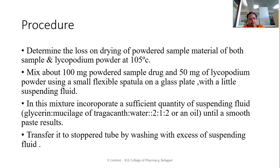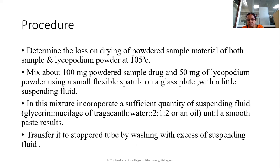Procedure for the lycopodium spore method: First, the powder should be dried at 105 degrees centigrade. Determine the loss on drying of both the powder sample material and the lycopodium powder at 105 degrees centigrade. Mix approximately 100 mg of the powder sample drug and 50 mg of lycopodium powder — a ratio of 2:1 — using a small flexible spatula on a glass plate with a little suspending agent. Incorporate a sufficient quantity of suspending fluid: glycerin, mucilage of tragacanth, and water in the ratio 2:1:2, or an oil, until a smooth paste results.